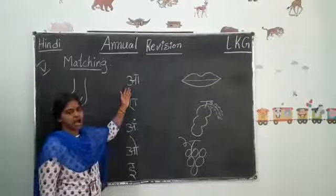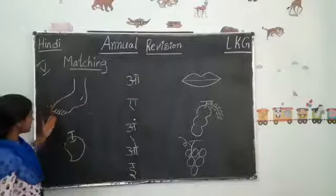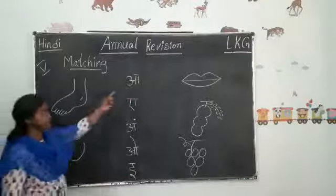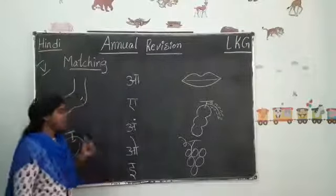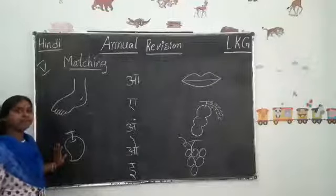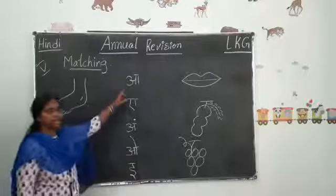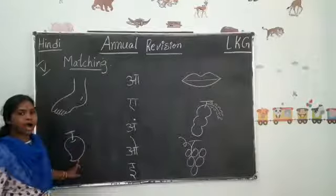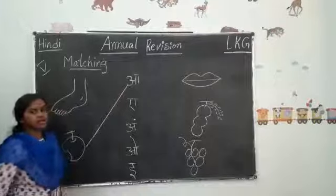First letter is A. A say Anna. Where is Anna? Sorry, this is A. A say Aam, not Anna. Aam means mango. This is mango. So draw a line. A to Aam. Okay? This is correct.